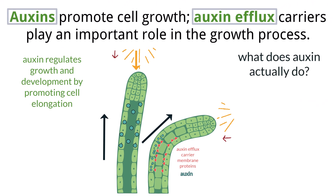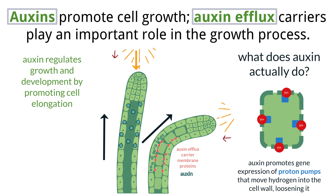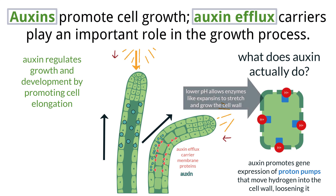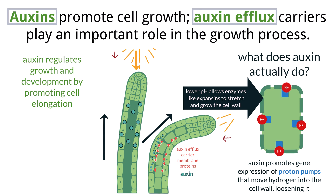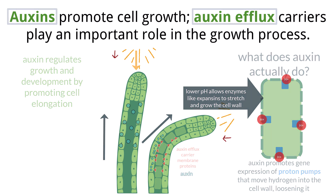How does auxin actually promote elongation? Auxin promotes specific genes to be transcribed, which leads to the synthesis of proteins — specifically proton pumps in the cell wall or the apoplast. These proton pumps cause hydrogen protons to move into the apoplast and lower the pH. This acidifies the cell wall and activates enzymes like expansins, leading to the loosening of the cell wall structure and allowing the cell to stretch and grow. That's how the shoot bends toward the light.